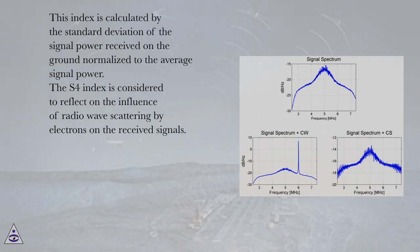This index is calculated by the standard deviation of the signal power received on the ground normalized to the average signal power.